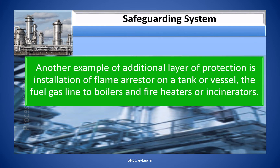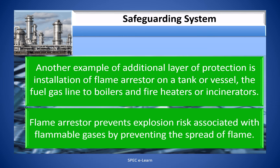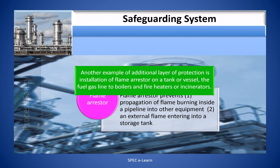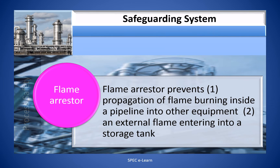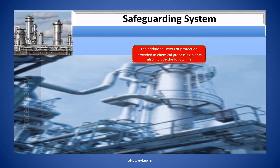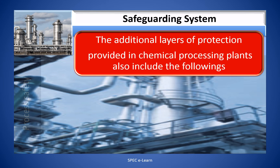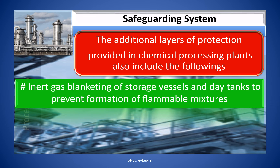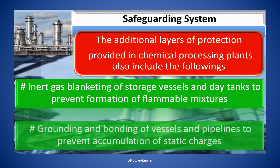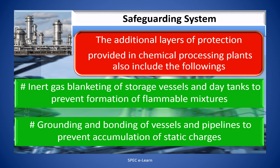Another example of an additional layer of protection is the installation of a flame arrester on a tank or vessel with a flue gas line to boilers, fired heaters, or incinerators. Flame arresters prevent the exposure risk associated with flammable gases by preventing the spread of flame — specifically: propagation of flame burning inside a pipeline into other equipment, and an external flame entering into a storage tank. Additional layers of protection in chemical processing plants also include inert gas blanketing of storage vessels and day tanks to prevent formation of flammable mixtures, and grounding and bonding to prevent accumulation of static charges.